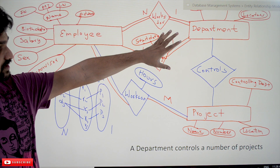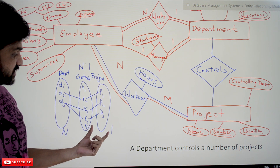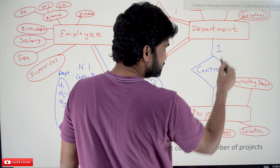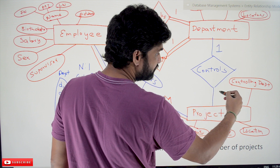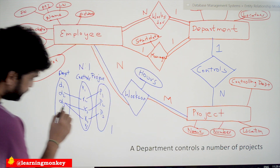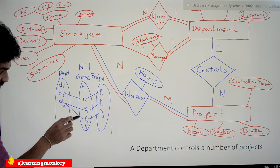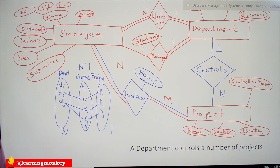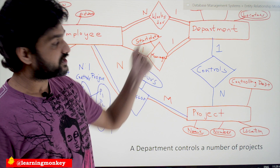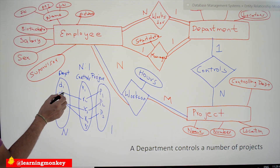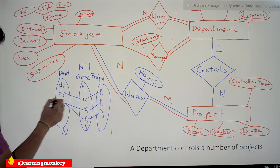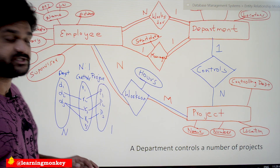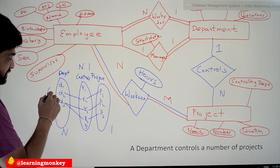On the ER diagram, the project has a maximum participation of 1, which is represented on the opposite side near department. Similarly, a department entity can participate in N number of projects, so N is placed on the opposite side near project. As for participation type: department 1 is not participating in any project, so department has partial participation — its minimum number of participation is zero.